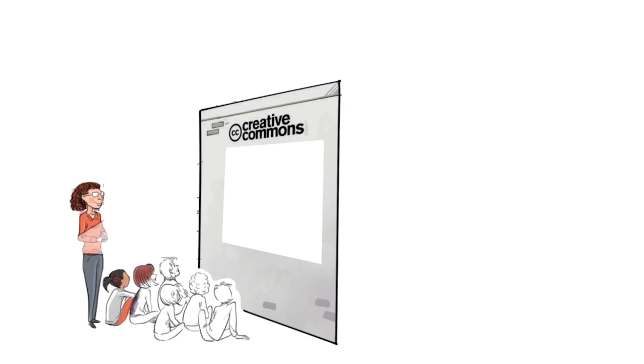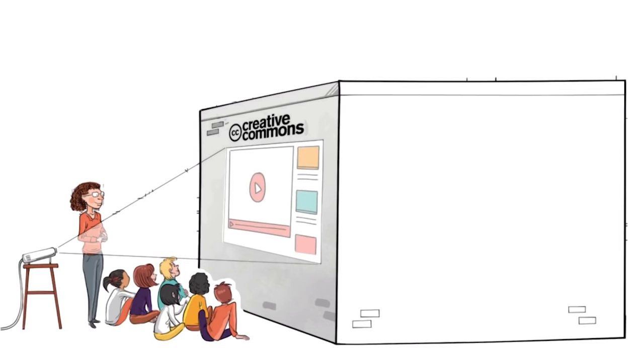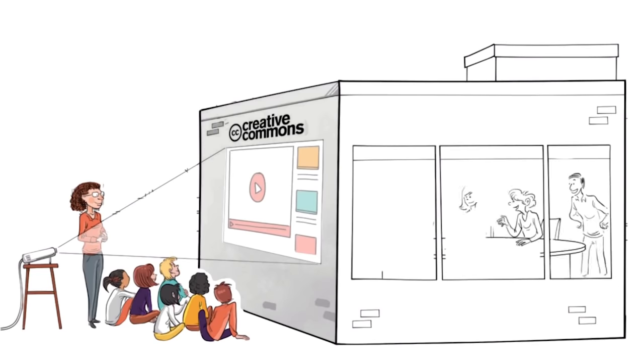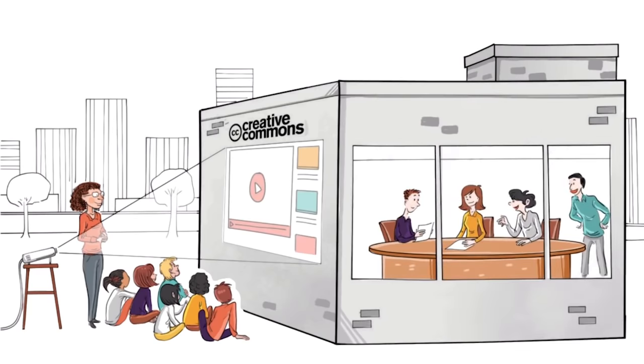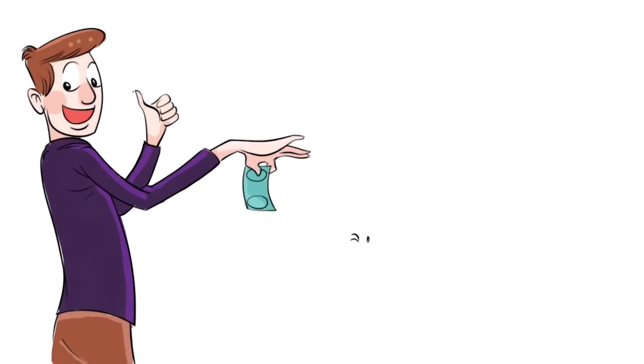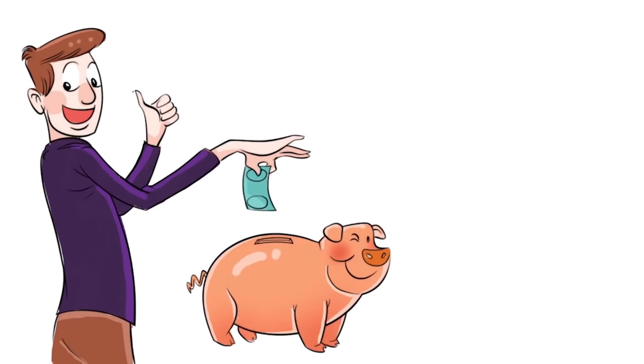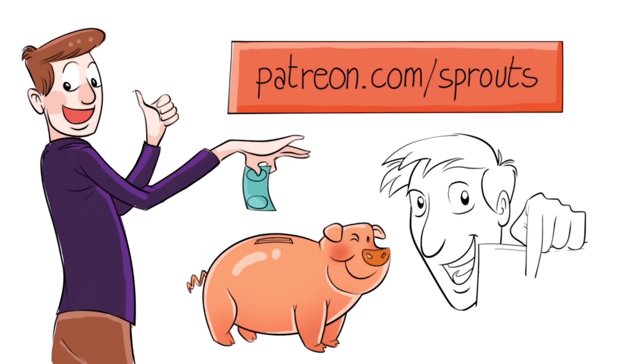Sprouts videos are published under the Creative Commons license. That means our videos are free and anyone can download, edit, and play them for personal use. And public schools, governments, and non-profit organizations can also use them for training, online courses, or designing new curriculums. To help us stay independent and support our work, you can join our patrons and contribute. Just visit patreon.com/sprouts. Even one dollar can make a difference.